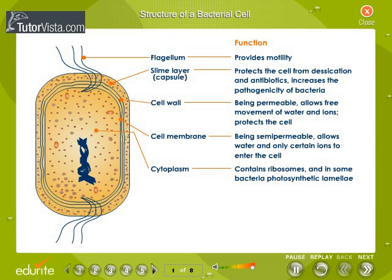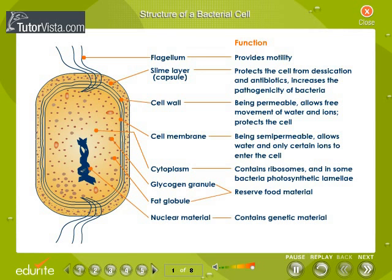The cytoplasm contains ribosomes, and in some bacteria, photosynthetic lamellae. The glycogen granules and fat globules reserve food material. The nuclear material contains genetic material, DNA. Ribosomes take part in protein synthesis.